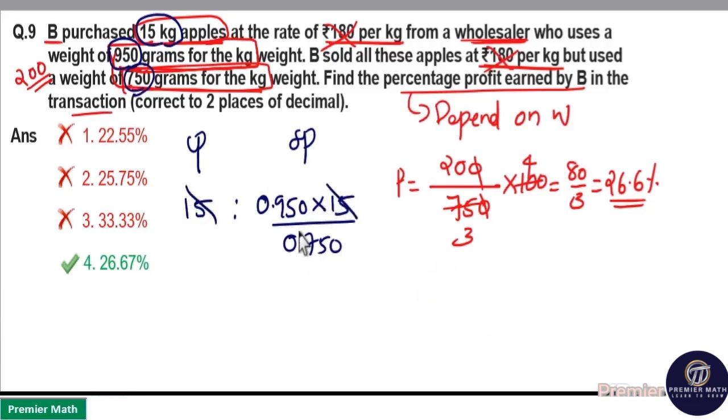Now 15-15 cancel. Here 0.95 by 0.75 means 95 by 75. This means 75 is to 95 is the cost price selling price ratio. Now difference is 20. This 20 is generated upon this cost price 75 into 100. So profit is 26.67 percentage.